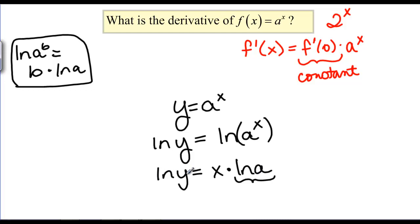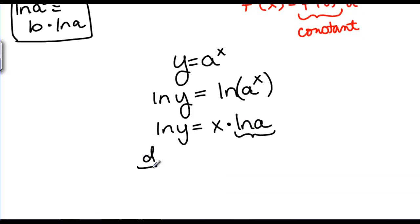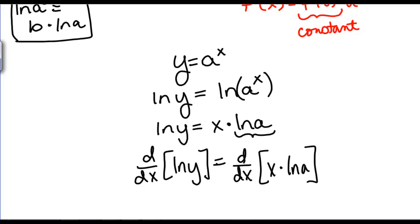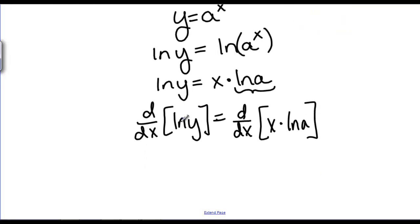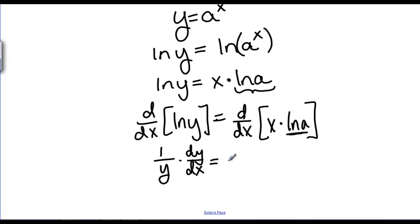Now we have natural log of Y and we know how to take the derivative of that. We have a constant times X, and we know how to take the derivative of that, so we can take d/dx of both sides. The derivative of natural log of Y: since the derivative of natural log of X is 1 over X, the outside function gives us 1 over Y, times the derivative of the inside function, so that's DY/DX. On the right side, since ln(A) is a constant, we use the constant multiple rule — this is ln(A) times the derivative of X, which is just 1, so this is ln(A).